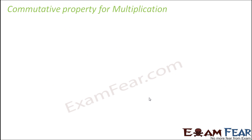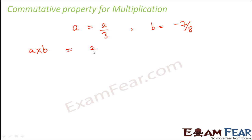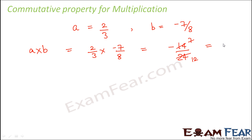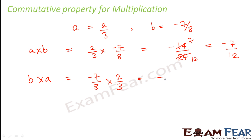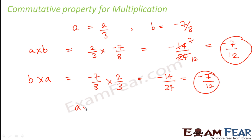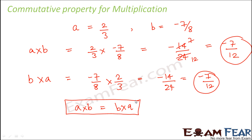Now let's look at multiplication. Consider rational number a as 2/3 and rational number b as minus 7/8. Calculating a into b: 2/3 multiplied by minus 7/8 gives minus 14/24, which simplifies to minus 7/12. Calculating b multiplied by a: minus 7/8 into 2/3 also gives minus 14/24, or minus 7/12. You get the same values, clearly showing that a into b equals b into a — so multiplication is commutative for rational numbers.